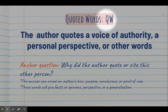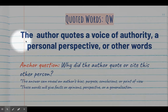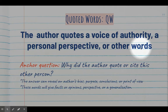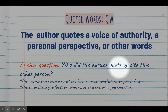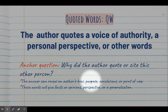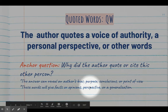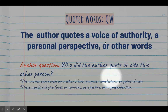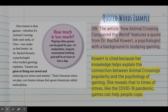Our fourth signpost is Quoted Words, and the abbreviation is QW. A quoted word signpost happens when the author quotes a voice of authority, a personal perspective, or other words — maybe from a document like the Constitution or the Declaration of Independence. Your anchor question when you find quoted words is: why did the author quote or cite this other person? The answer can reveal an author's bias, their purpose, conclusions, or point of view, and these words will give facts, opinions, perspectives, or generalizations.